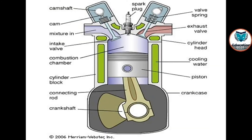This is another figure of a spark ignition engine. In this figure, you can see various engine components and their positions in the engine, such that the spark plug is situated at the top side of the engine and the piston is connected to the crankshaft with the help of the camshaft.